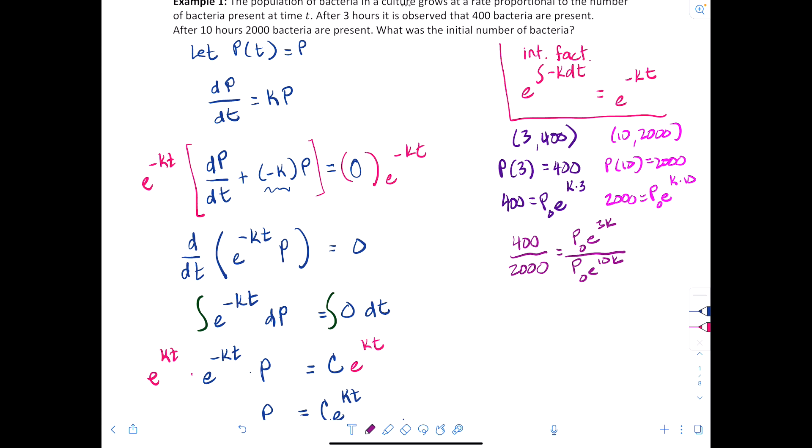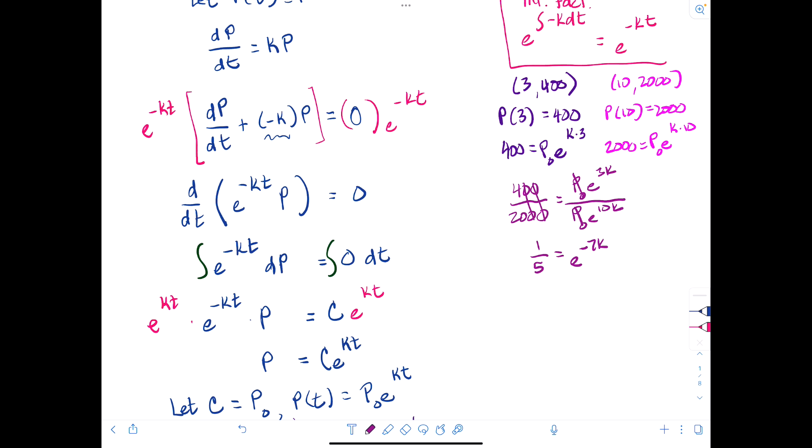We have 400 is to 2000 as P₀ e to the 3k is to P₀ e to the 10k. Then simplifying, the zeros will divide out, so we would have 1/5 on the left side. The P₀s divide out, and when you subtract 3k from 10k, our exponent will be negative 7k. Evaluating the natural log at both sides, natural log of 1/5 ends up being negative natural log of 5, and this would end up being negative 7k. So natural log of 5 divided by 7 is equal to k.